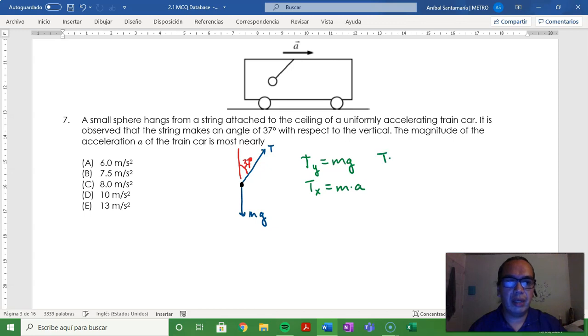T y can be substituted as T sine of the angle theta, sorry, T cosine of the angle theta because the angle is with a vertical, and that's equal to mg. On the other hand, T x is T sine of angle theta, and that's equal to ma.